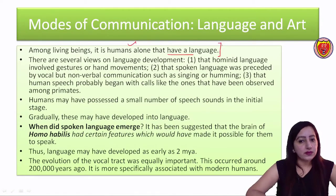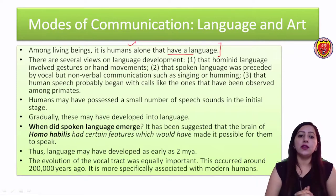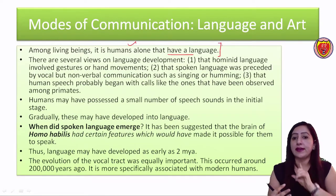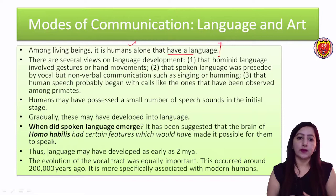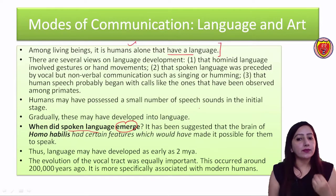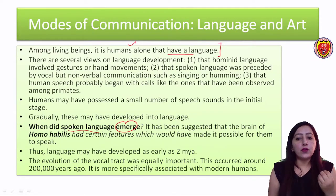Humans may have possessed a small number of speech sounds in the initial stage, and gradually these may have developed into language. Slowly, the sounds developed - at that time there were no words, no language - but slowly, slowly these speech sounds developed into spoken language. The spoken language emerged, and this suggests that Homo habilis had a brain which would have made it possible for them to speak. They used their mind and their brain to speak, and thus language was developed around 2 million years ago.